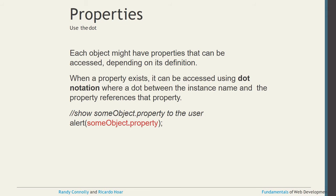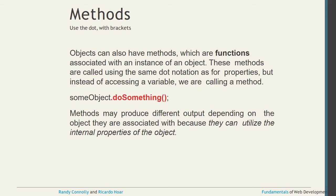Each object may have properties that can be accessed depending on its definition. When a property exists, it can be accessed using dot notation — a dot between the instance name and the property reference. For example: 'alert(someObject.property)'. Dot notation is required to access the property of an object.